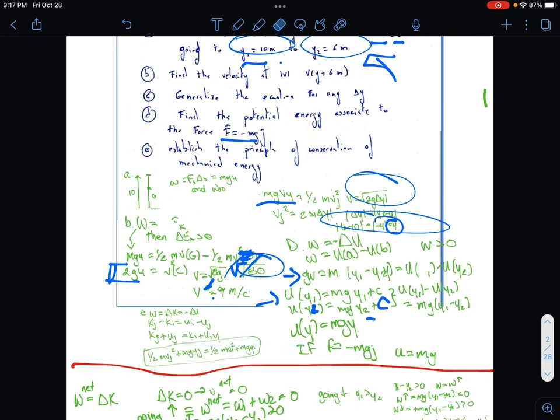We have half m*vj plus mg*yj equals half m*v squared plus mg*y, and then that's going to be how we establish the principle of conservation of our problem right here. This equation is going to come up right here.